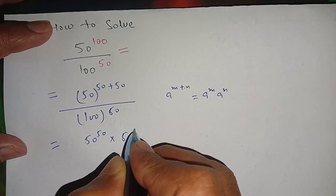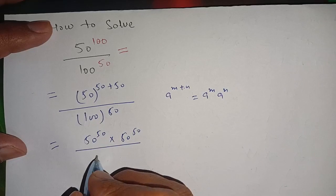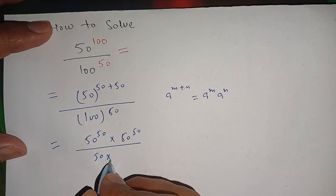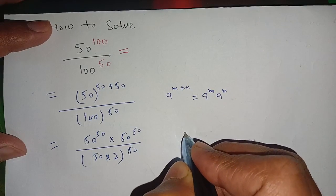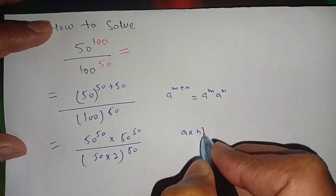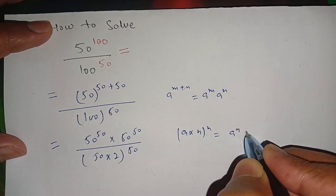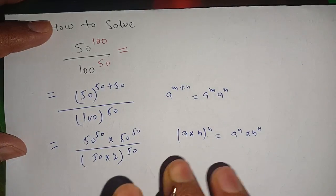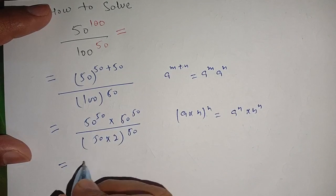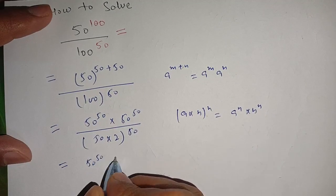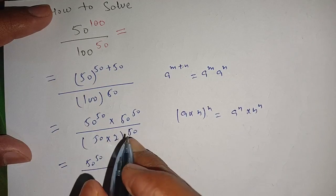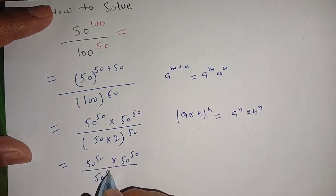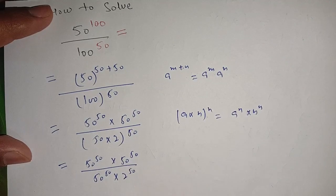Now we can write it as 50 power 50 into 50 power 50, divided by 100 — which can be written as 50 multiplied by 2 — power 50. We know the identity: (a multiply b) power n is equal to a power n multiply b power n. So we expand to get 50 power 50 multiplied by 50 power 50, divided by 50 power 50 multiplied by 2 power 50.